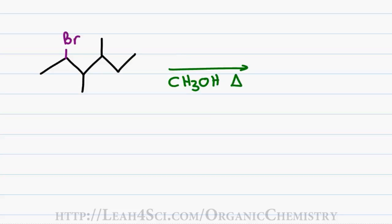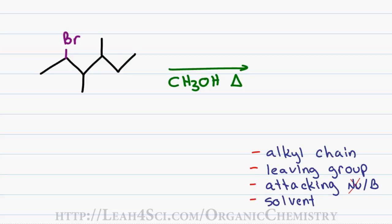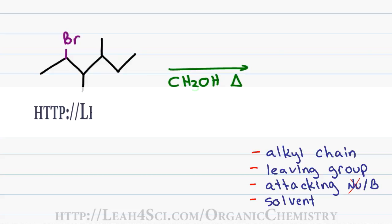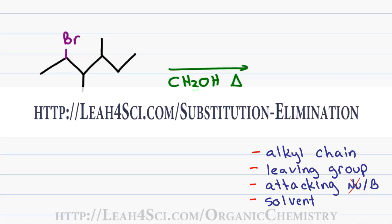Let's see what happens when we react the molecule 2-bromo-3,4-dimethylhexane in a heated solution of methanol. We'll see what happens by analyzing the checklist I used to analyze all substitution and elimination reactions. For a complete guide on how to use this checklist, visit my website, Leah4Sci.com/substitution-elimination.